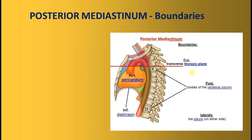A short recap of the mediastinum: it is a septum in the midline, or the space between the two lungs, which separates the two lungs and their pleura. It is divided into superior and inferior by an imaginary plane passing through the sternal angle or angle of Louis — in front the manubriosternal joint and behind the intervertebral disc between T4 and T5.